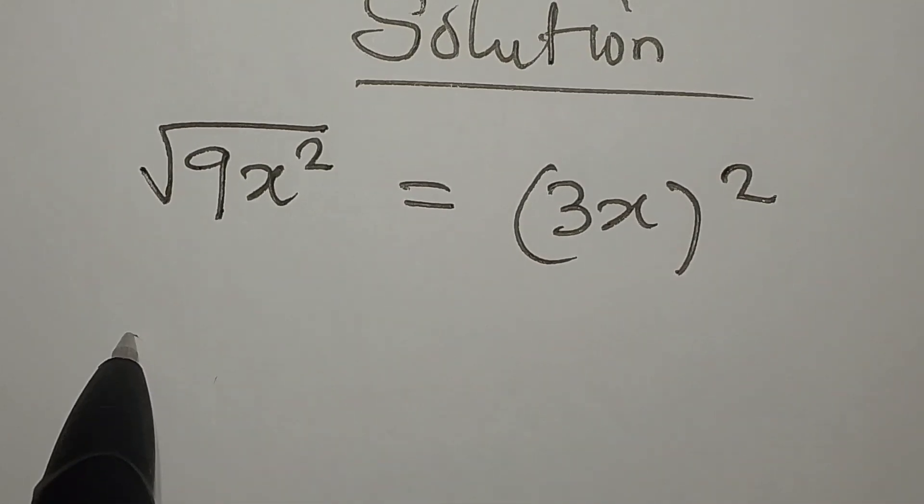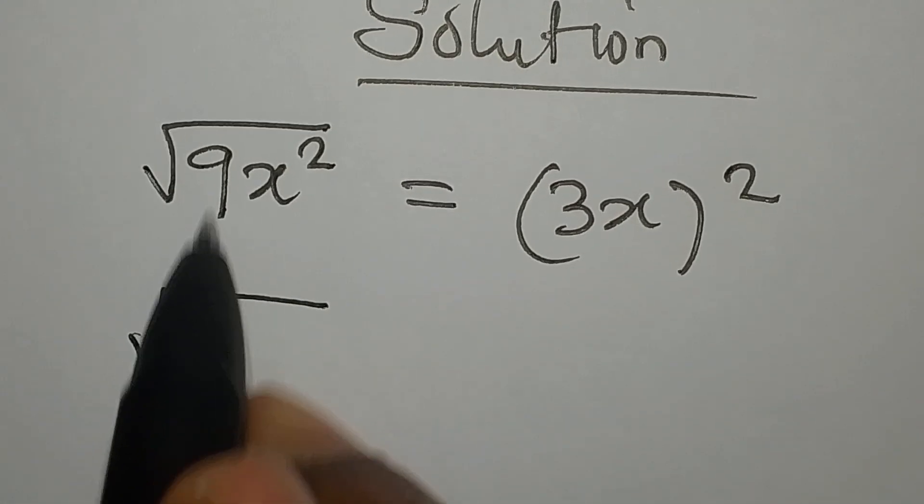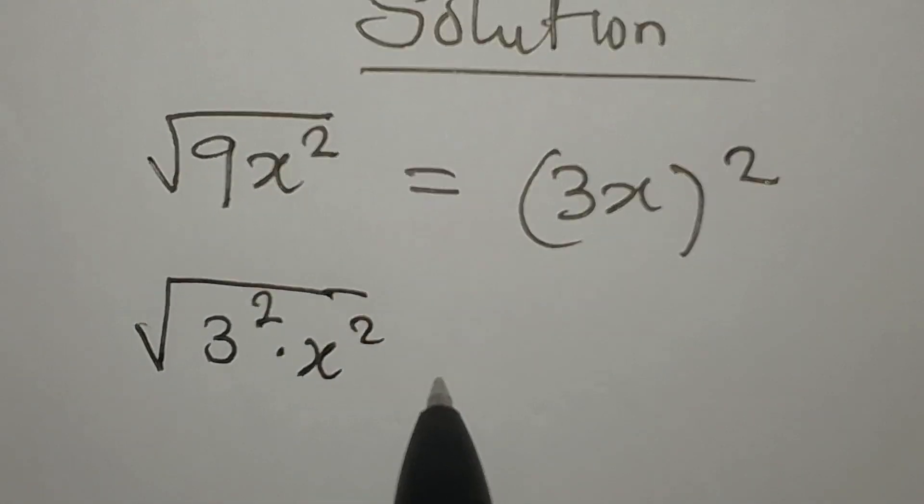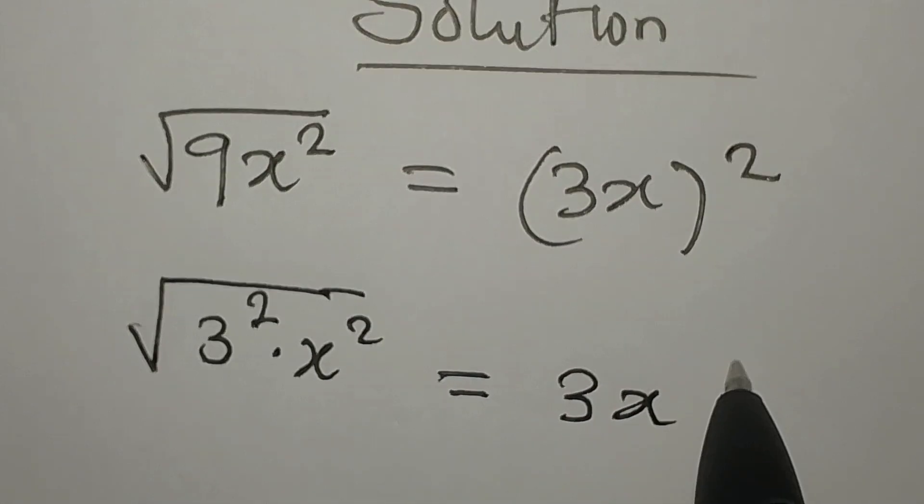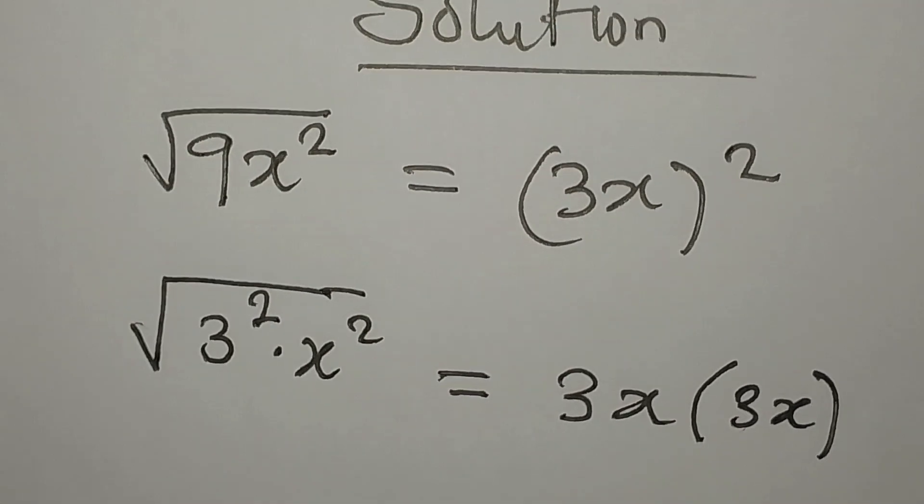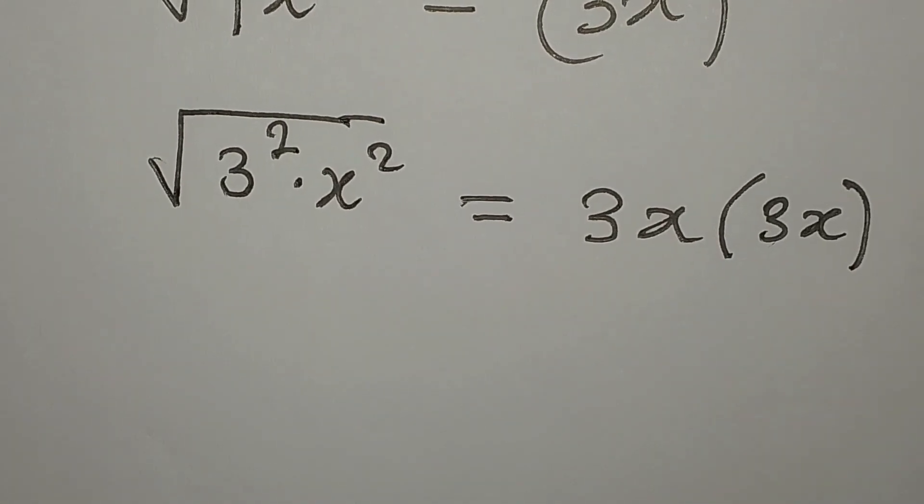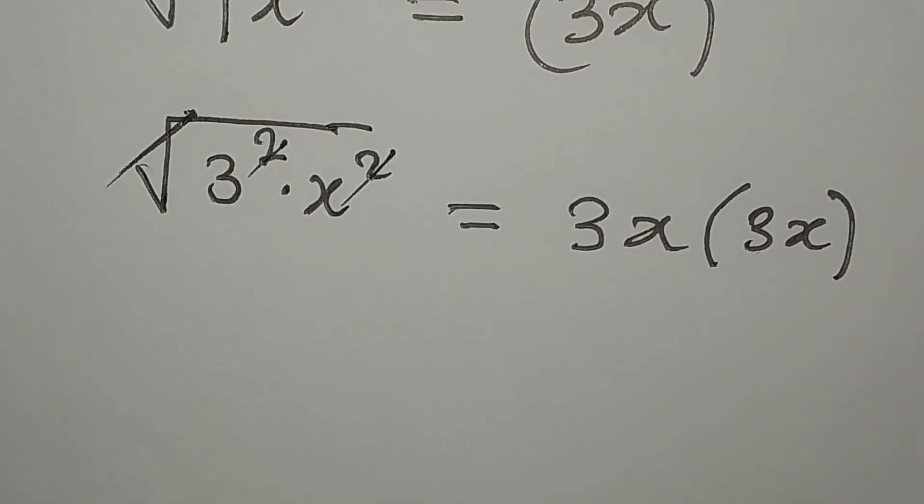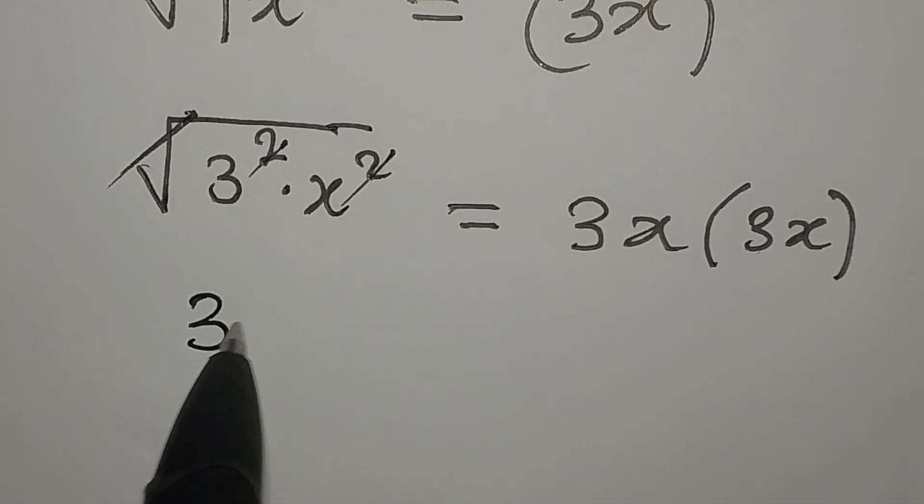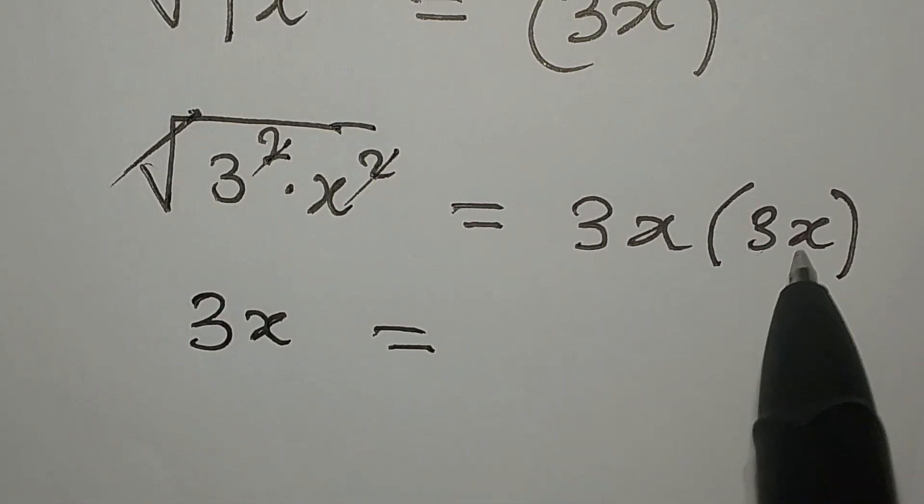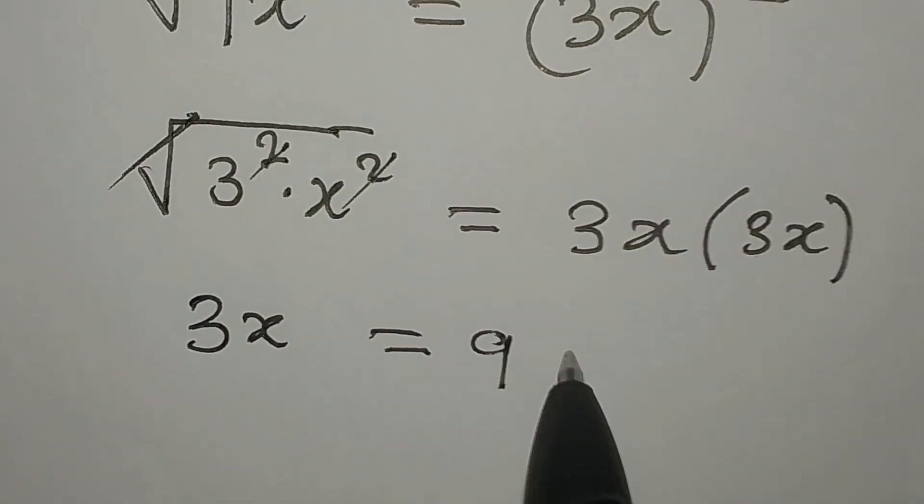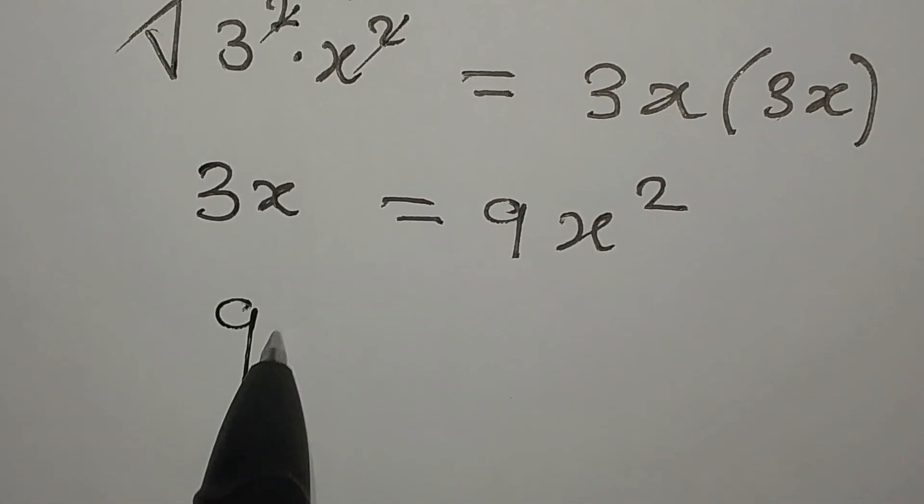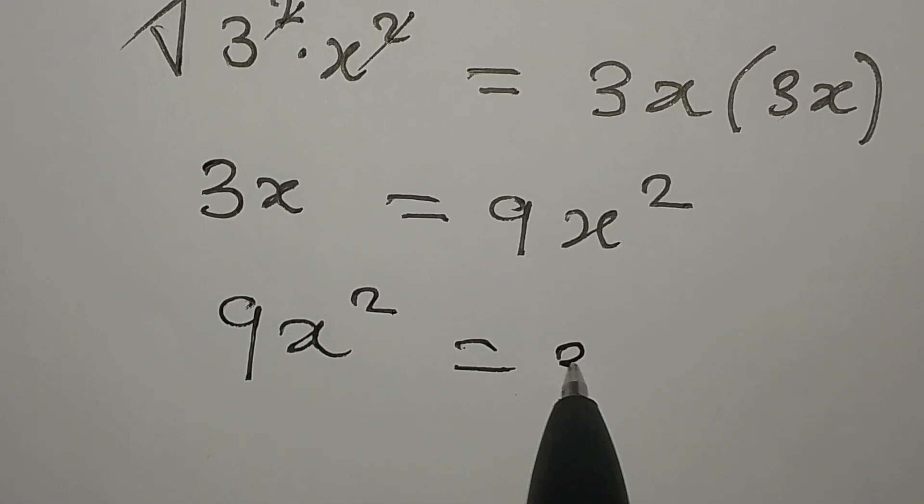This is the same thing as 9, which is 3 squared, multiplied by x squared, and this equals 3x multiplied by 3x. If this is the case, then this and this can cancel, and the square root will cancel, so we have 3x which equals 3 times 3 is 9, x times x is x squared. Now let me turn this around so I have 9x squared equal to 3x.